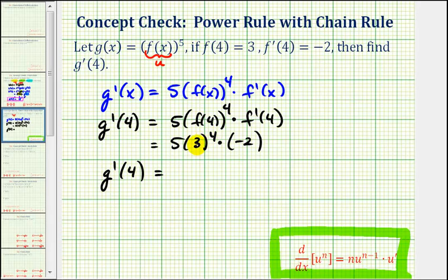Well, three to the fourth is equal to eighty-one. Eighty-one times five is equal to four hundred five. Four hundred five times negative two is equal to negative eight hundred ten.